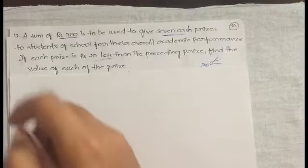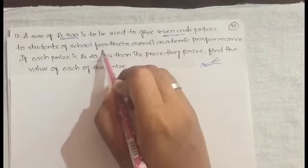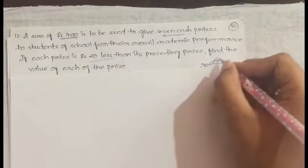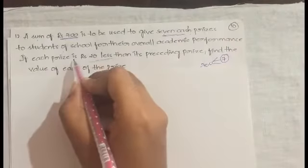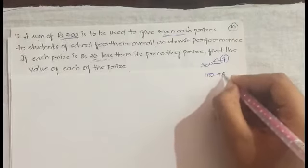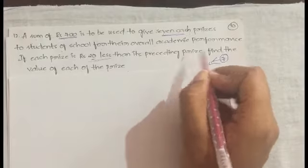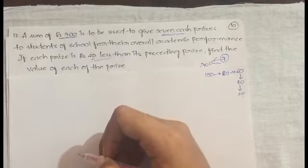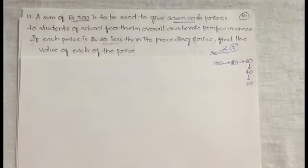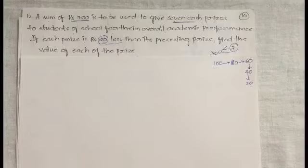The next question: a sum of rupees 700 is to be used to give seven cash prizes to students of a school for their overall academic performance. If each prize is rupees 20 less than its preceding prize — so if the first prize is 100, the next is 80, then 60, then 40, and so on — find the value of each prize. This is clearly an arithmetic progression because every time rupees 20 is only being reduced.